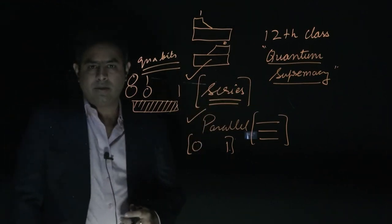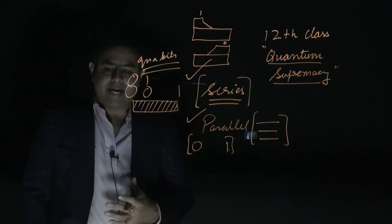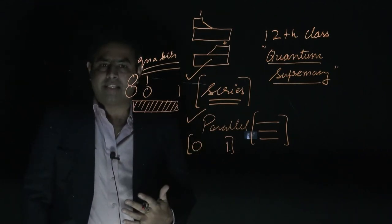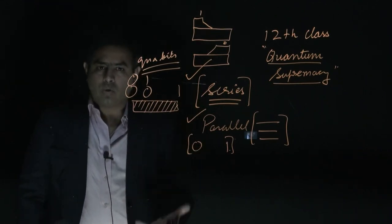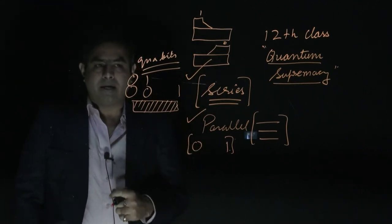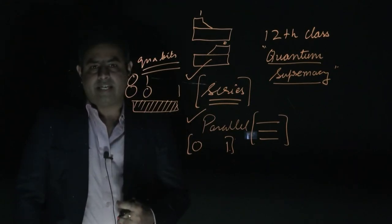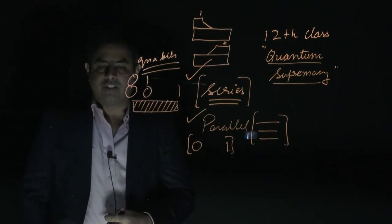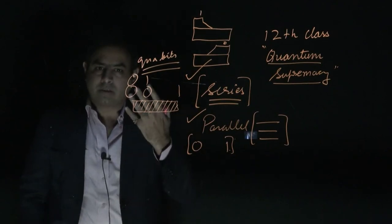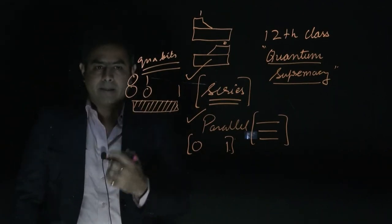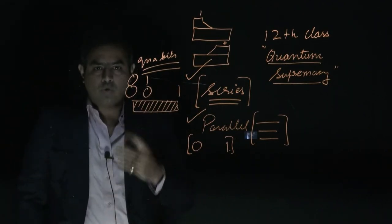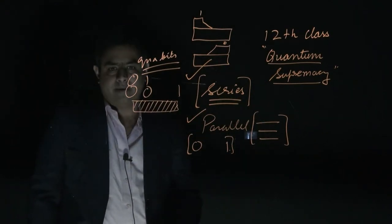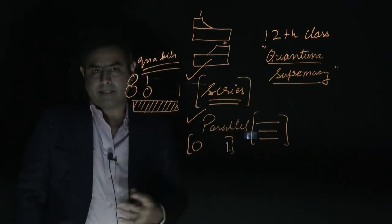This quantum supremacy has recently been achieved by Google. Google ne supercomputer se calculation karke dekha to bahut zyada time laga, aur quantum computer se calculation karke dekha to speed bahut badh gayi, time kam laga. Super computers ko overtake kar gaya hai — yahi quantum supremacy hai.